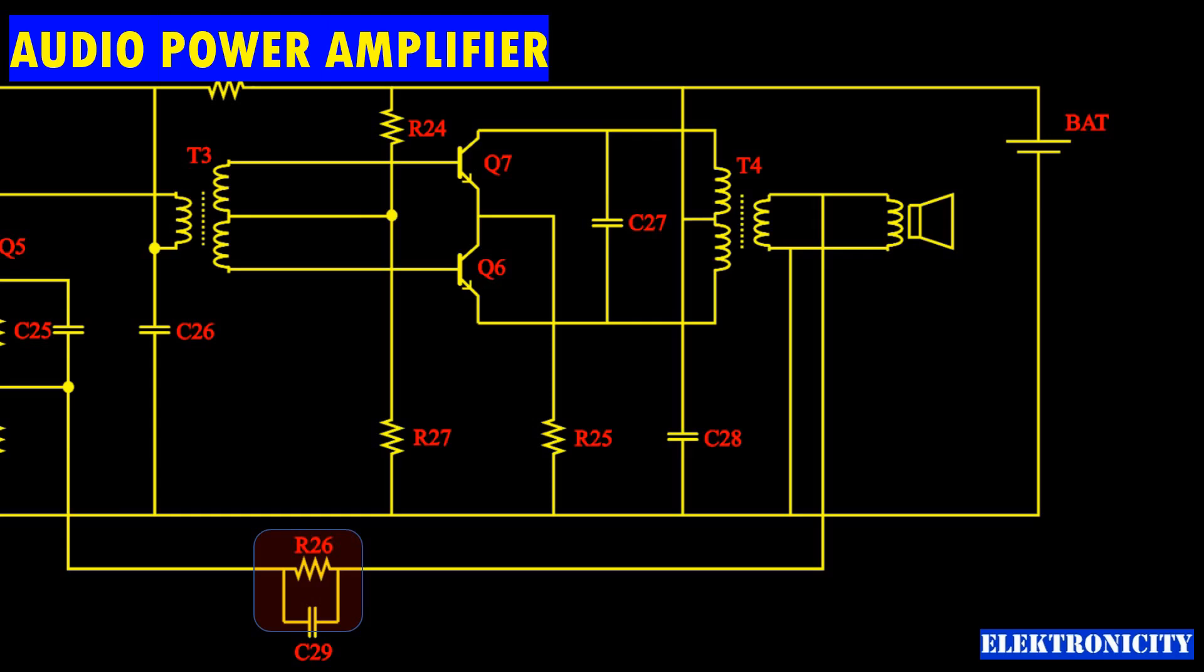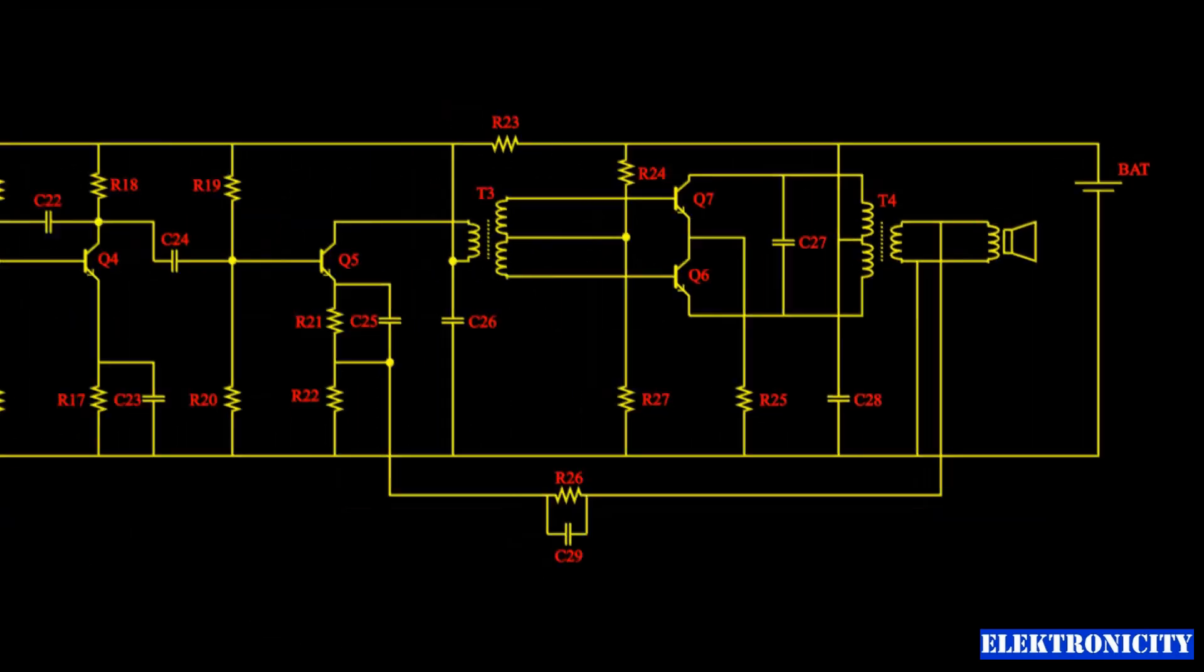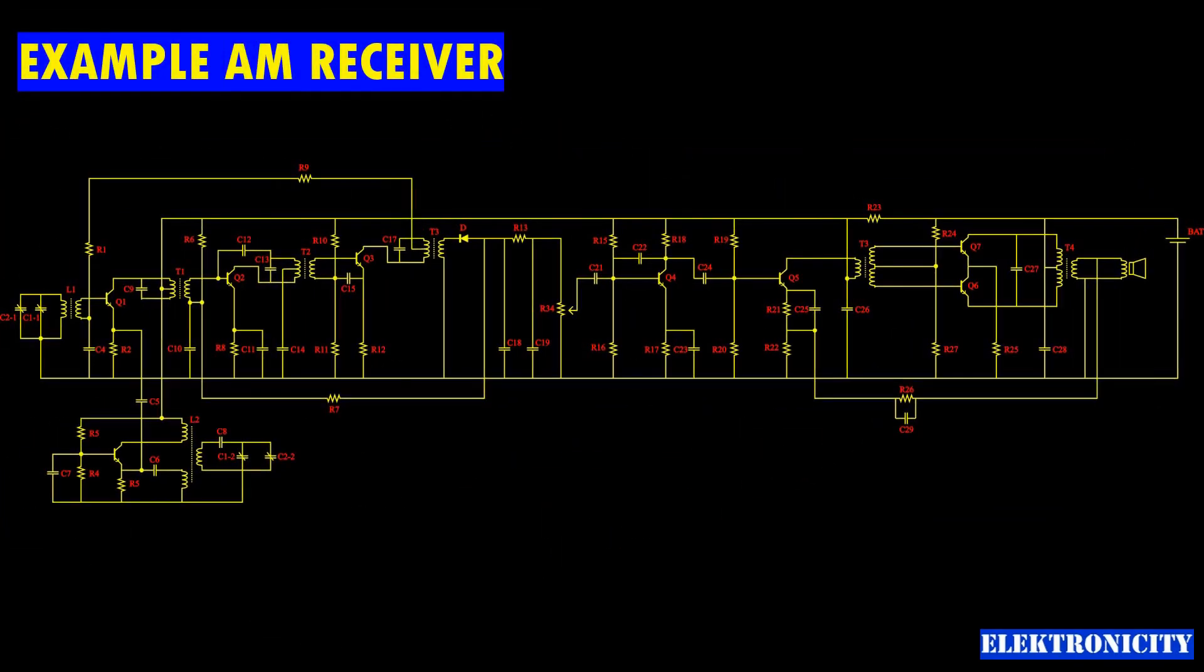R26 and C29 provide a negative feedback, reducing distortion and enhancing audio quality and frequency response. For further details about this circuit, we refer viewers to the references in the description of this video.